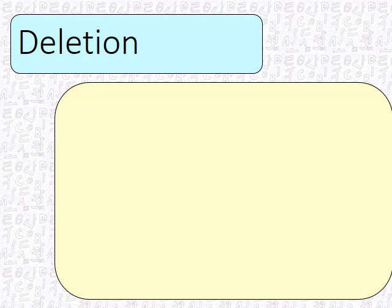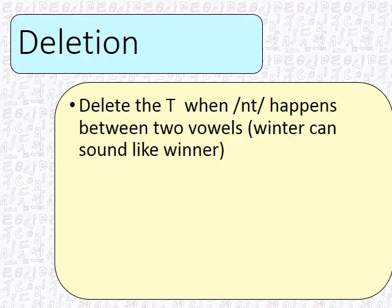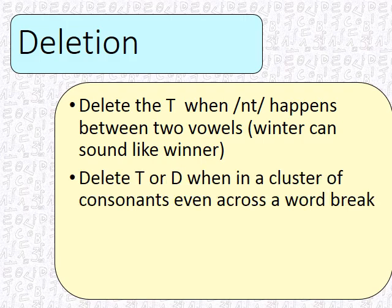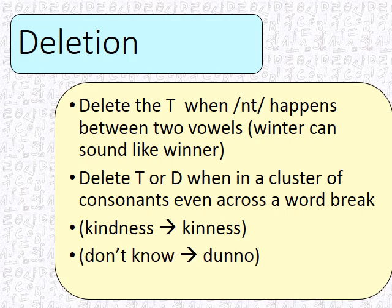Next is deletion. Deletion is when a sound disappears — like when the T disappears. NT between two vowels: 'winter' — you don't actually say the T clearly; when talking about a winter storm, the T almost disappears. You can also delete the T or D when it is in a cluster of consonants, even across word breaks or in the middle of words. So 'kindness' — it's hard to say N-D-N, so it ends up sounding like 'kindness' without the D. 'Don't know' is another very popular one — it often comes out as 'dnno.'